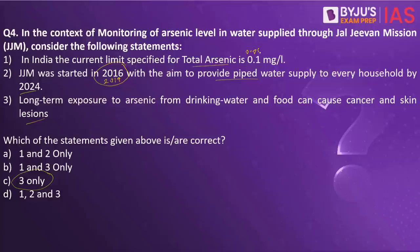The second statement is also wrong. The third statement is right because long-term exposure to arsenic from drinking water and food can cause cancer and skin lesions. The immediate consequences of consuming arsenic include vomiting, abdominal pain, diarrhea, muscle cramping, and it can also result in death in extreme cases. On long-term exposure, it leads to cancer, skin lesions, cardiovascular disease, diabetes, and children exposed to arsenic will have impact on cognitive development and increased death during adulthood.